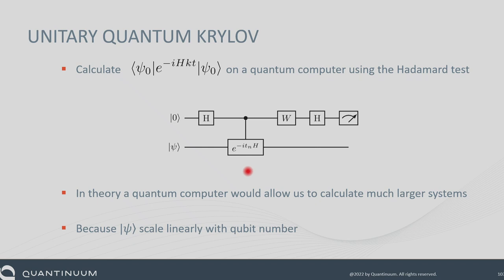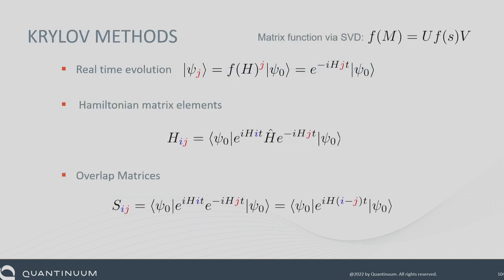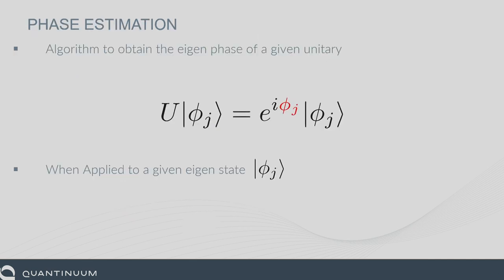I also have a paper implementing this under the name of variational phase estimation with variational fast forwarding, where we do approximate compilation of these objects to solve the same problem. We have about 15 minutes to cover quantum phase estimation — that is not enough time, but let's go.